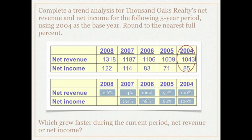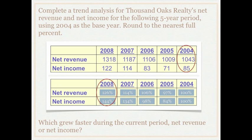The ultimate question was: which grew faster during the current period — net revenue or net income? We can see this because we've done the percentages. If we just have the raw numbers from the chart, we really can't answer this question — we need the percentage growth, and trend analysis allows us to do that. We can see that net income has grown at a faster rate than net revenue, telling us that revenues are growing faster than expenses.